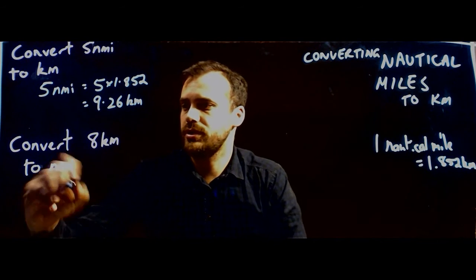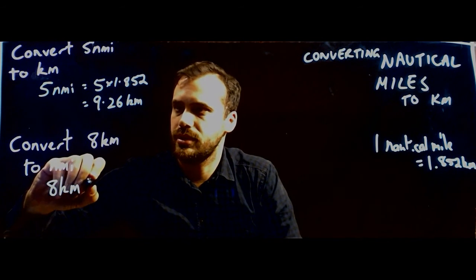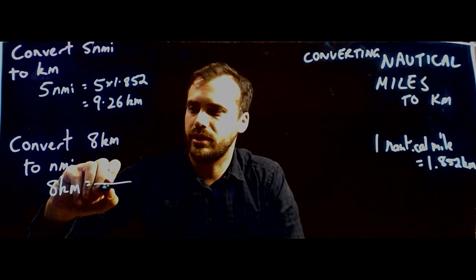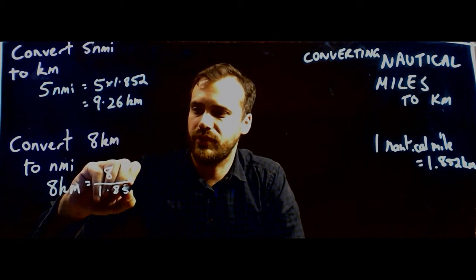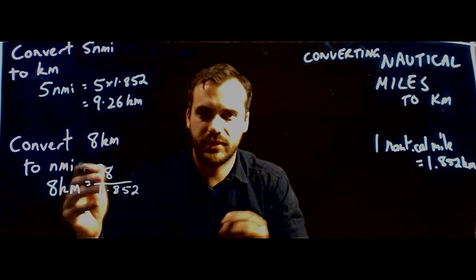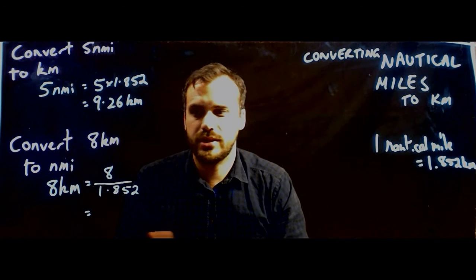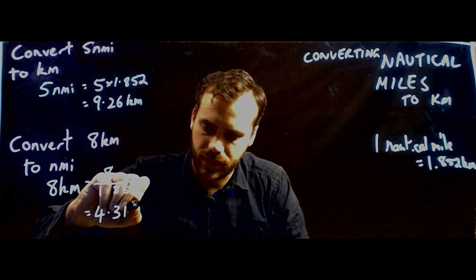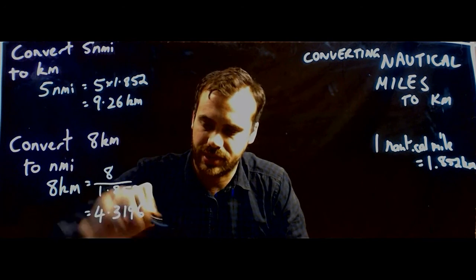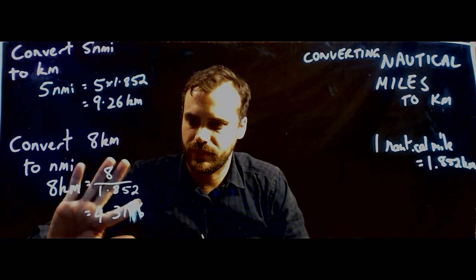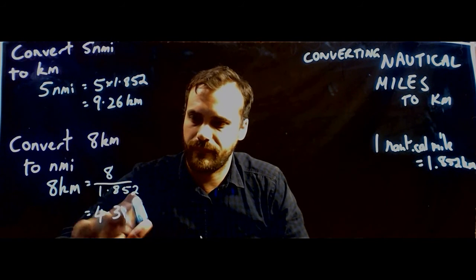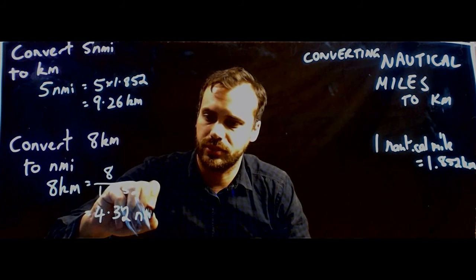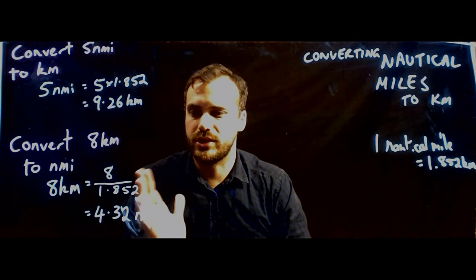Let's try out our question. Eight kilometres equals eight divided by 1.852, and this is going to give us our answer in nautical miles. This gives a long decimal — I end up with 4.3196. Let's round it and say 4.32 nautical miles.